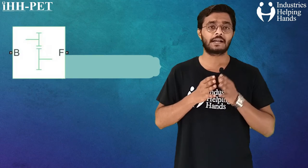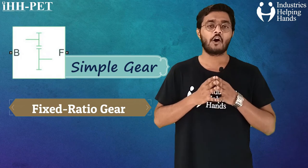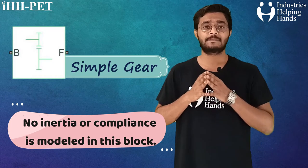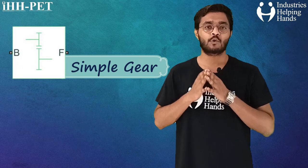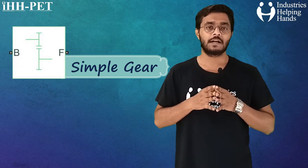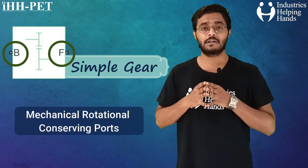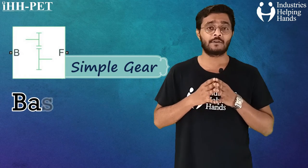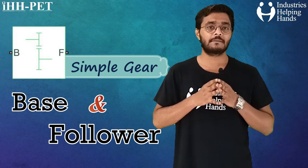We have chosen a simple gear block, which represents a fixed ratio gearbox. No inertia or compliance is modeled in this block. Meshing and viscous bearing losses are also provided to fill out the parameters. Connections B (base) and F (follower) are mechanical rotational conserving ports, and you have to specify the relation between base and follower rotation directions with the output shaft rotation parameter.